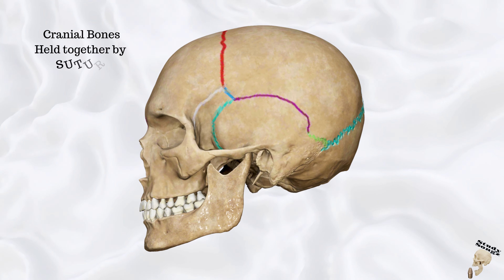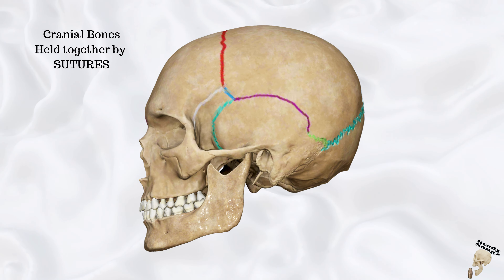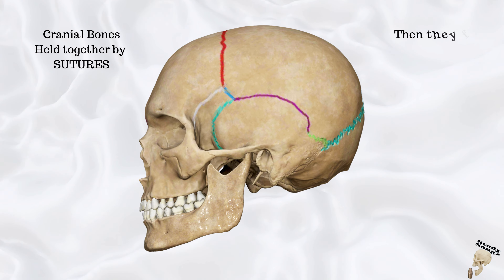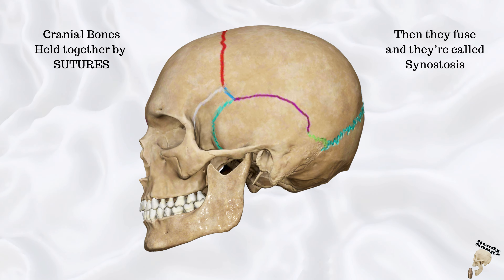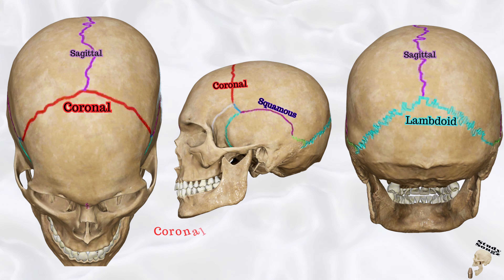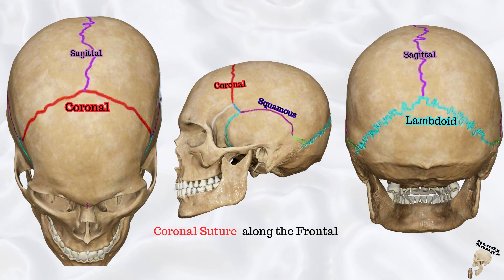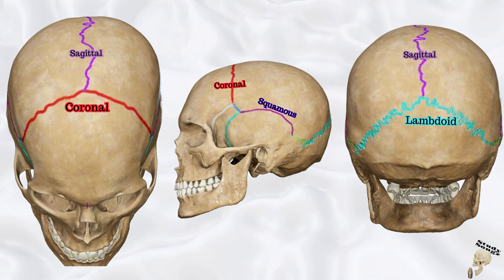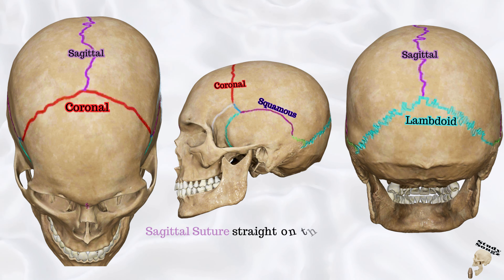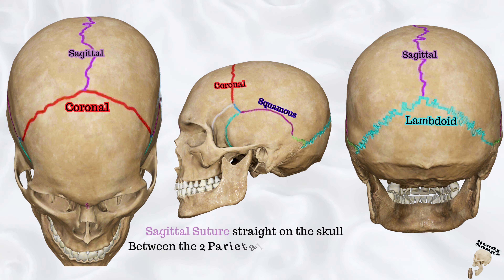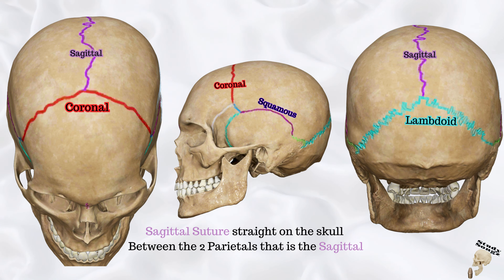Cranial bones are held together by sutures, then they fuse and they're called synostosis. Coronal suture along the frontal, sagittal suture straight on the skull.